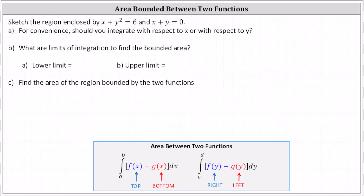Below we have the two possible formulas to determine the area bounded by two functions — on the left with respect to x, on the right with respect to y. When integrating with respect to x, we must have functions of x and the top function minus the bottom function. When integrating with respect to y, we have the right function minus the left function, as functions of y.